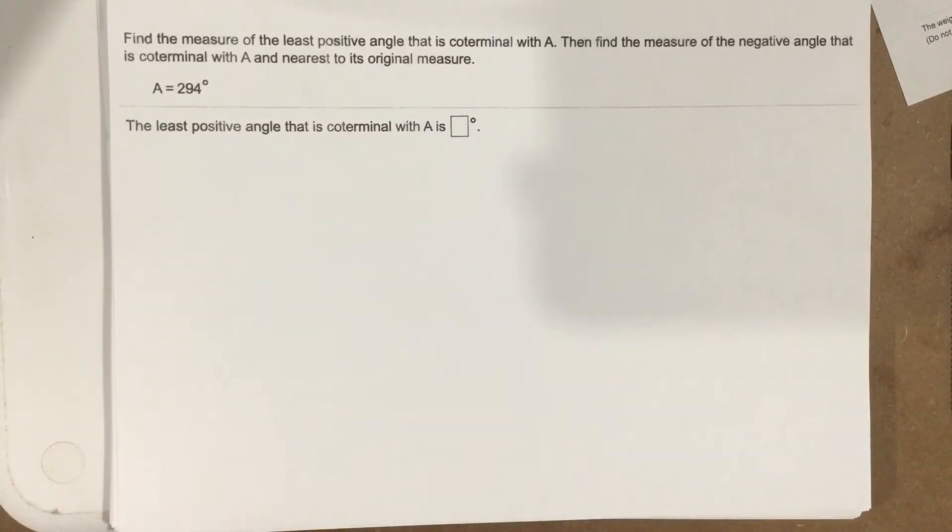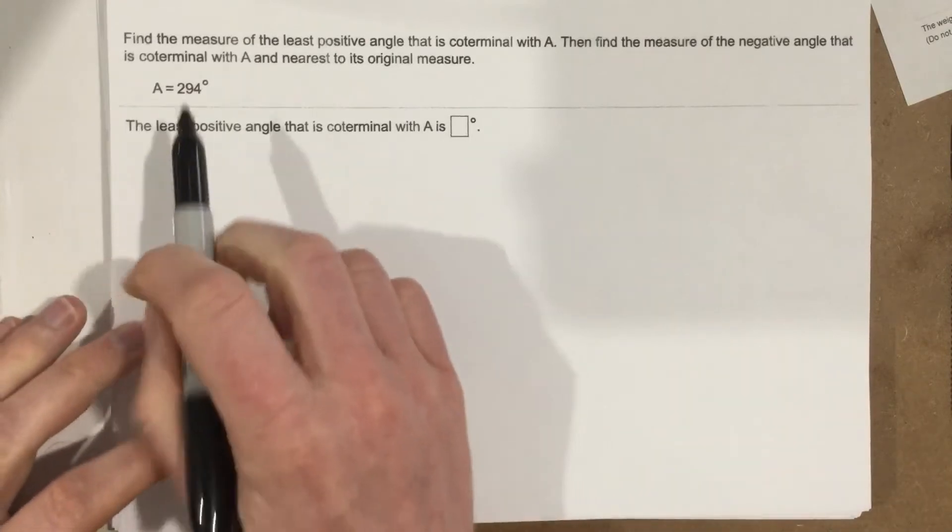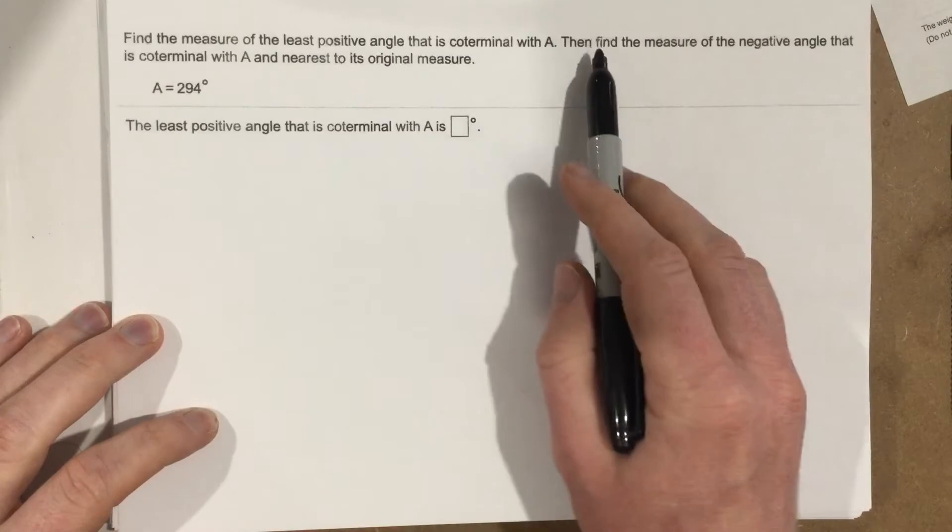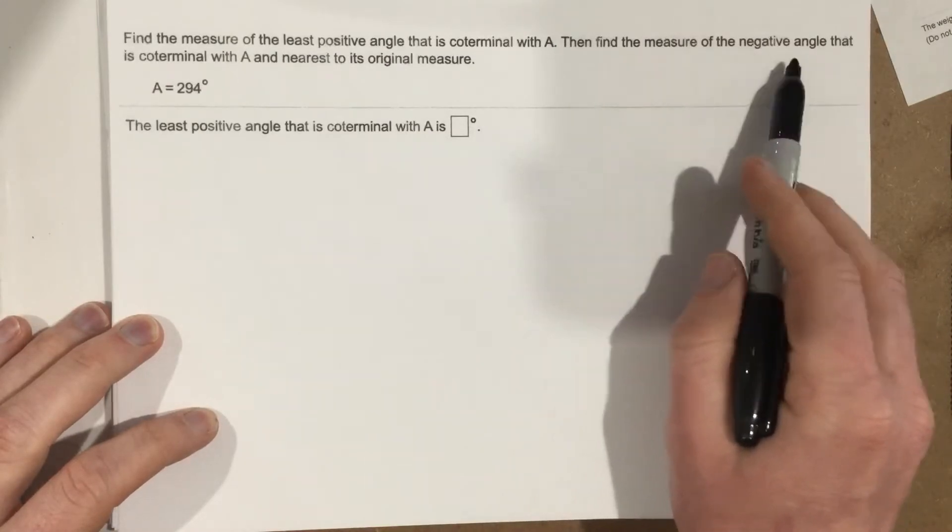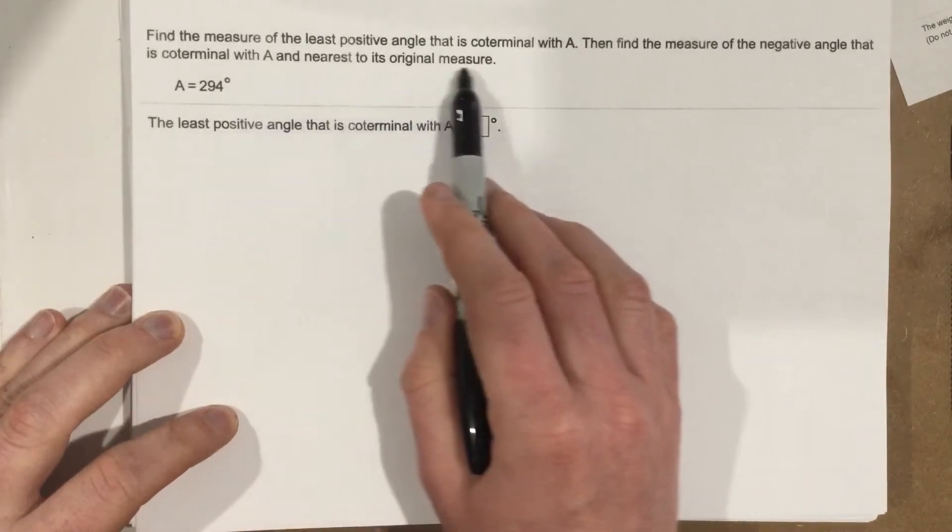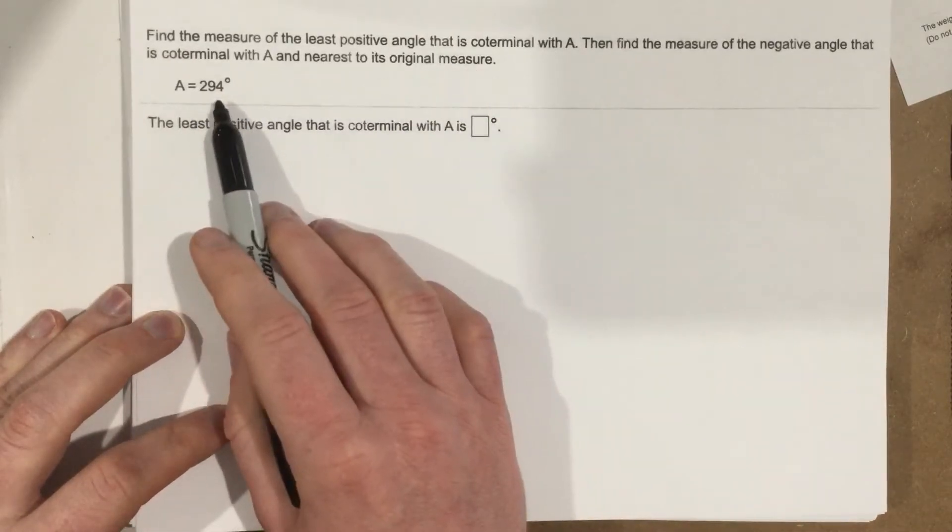This is problem number one from section 6.1. This problem is asking you to find the measure of the least positive angle that is coterminal with A, then find the measure of the negative angle that is coterminal with A and nearest to the original measure. A equals 294 degrees.